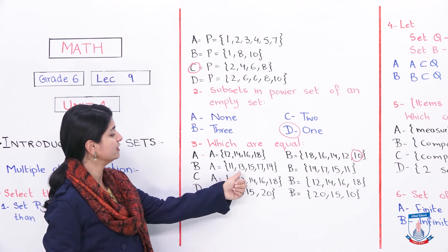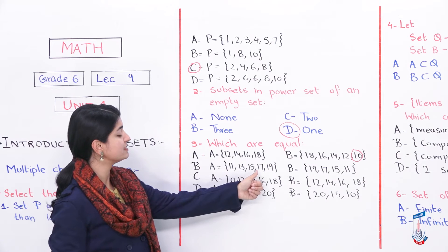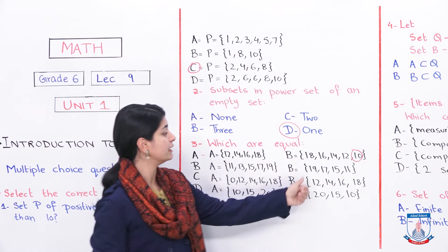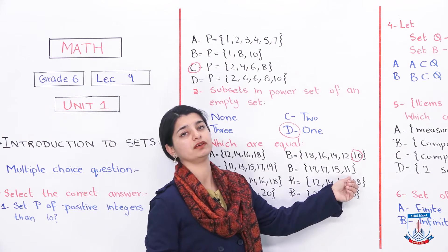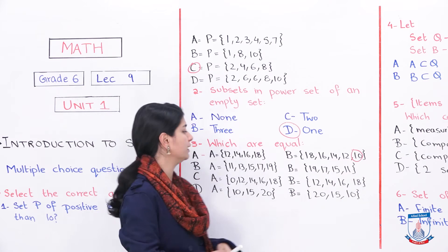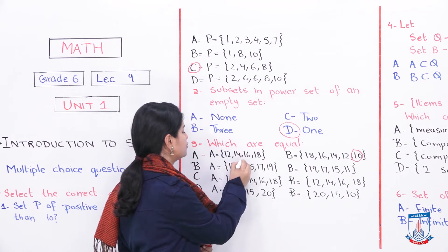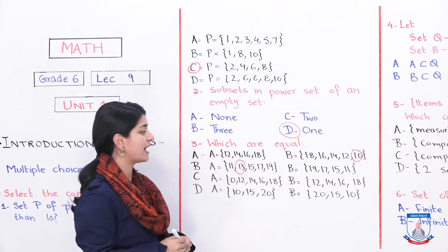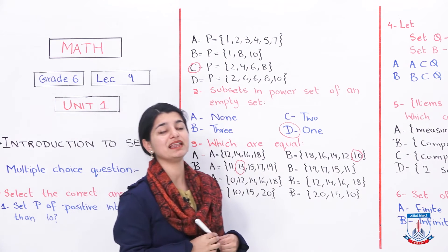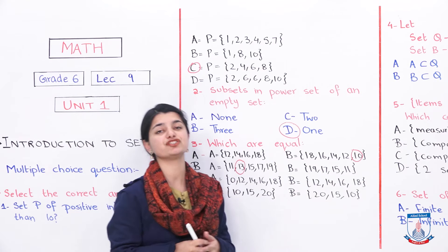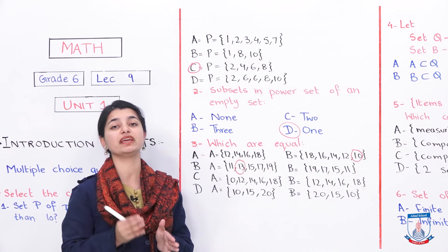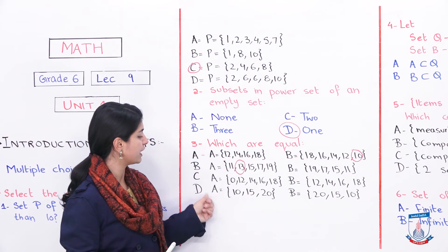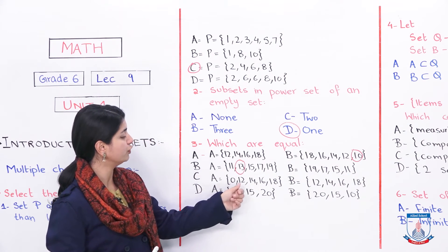Option B has A = {11, 13, 15, 17, 19} and B = {19, 17, 15, 11}. Here 13 is missing from B, so all elements are not the same — these are not equal sets and this option is cancelled.